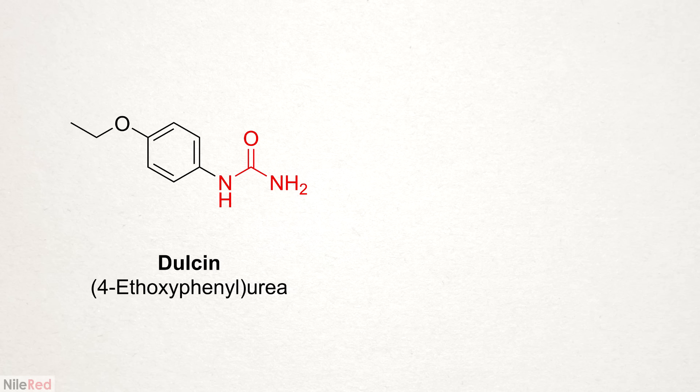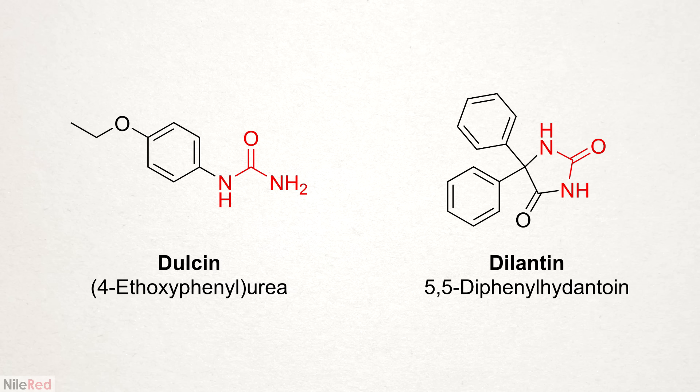For this video, I've decided to continue this month's apparent theme of urine chemistry, and I'll be isolating some urea from my own pee. Then, in some future videos, I'll be using the urea to make an old, now-banned artificial sweetener, as well as an anti-seizure medication.